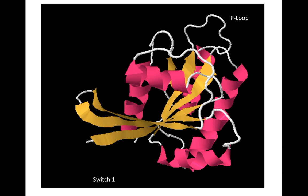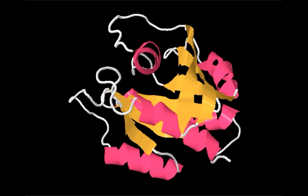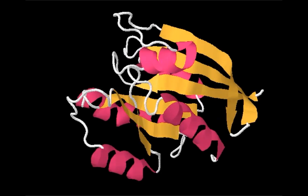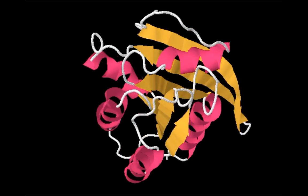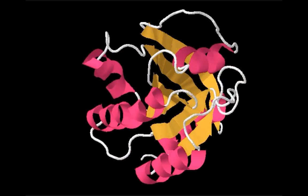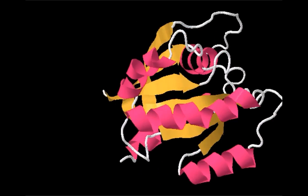The G2 motif, also called switch 1, contains threonine and binds the terminal phosphate of GTP. The G3 motif, also called switch 2, contains a conserved glycine residue that is crucial in binding specificity, as well as activating GTP hydrolysis. The G4 and G5 domains provide additional specificity factors and help with nucleotide recognition.